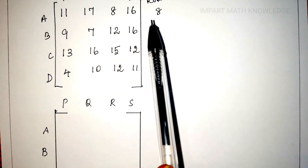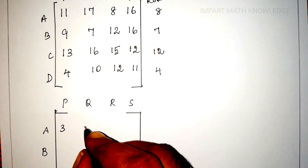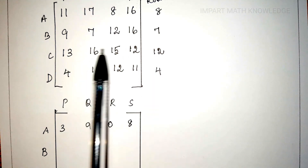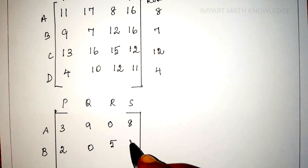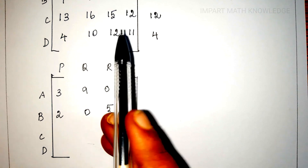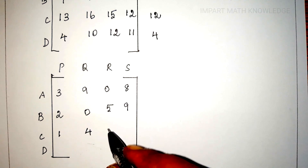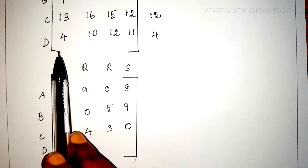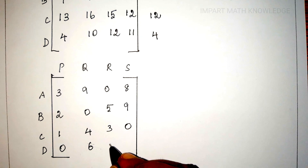For the first row, subtracting 8: 11−8=3, 17−8=9, 8−8=0, 16−8=8. For the second row, subtracting 7: 9−7=2, 7−7=0, 12−7=5, 16−7=9. For the third row, subtracting 12: 13−12=1, 16−12=4, 15−12=3, 12−12=0. For the fourth row, subtracting 4: 4−4=0, 10−4=6, 12−4=8, 11−4=7.